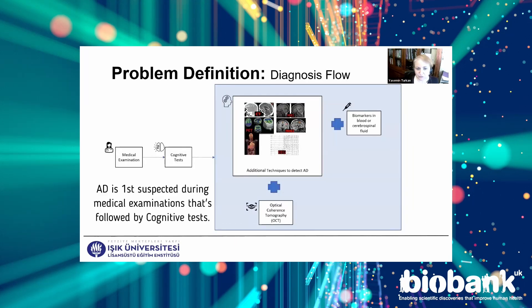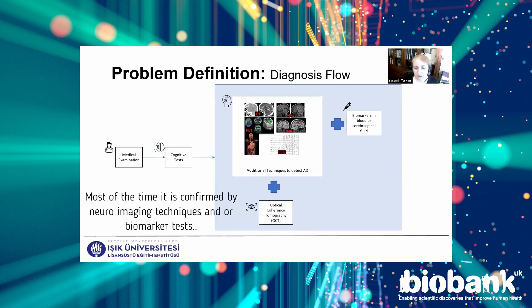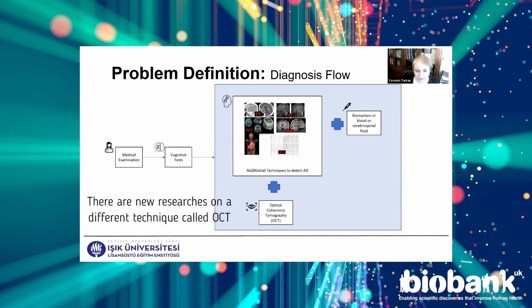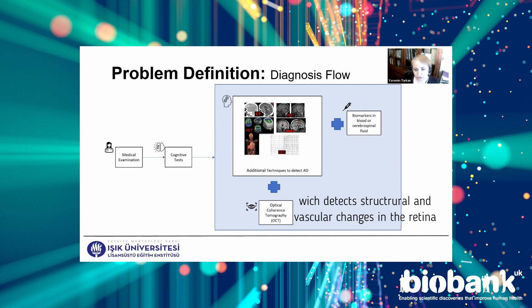AD is first suspected during medical examinations, and that is followed by cognitive tests. Most of the time it is confirmed by neuroimaging techniques and/or biomarker tests. There are new research approaches on different techniques called OCT, which detects structural and vascular changes in the retina.